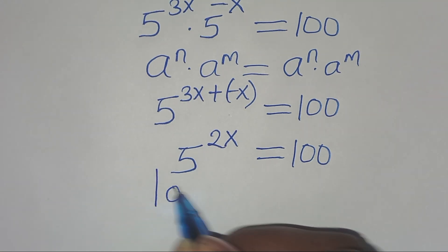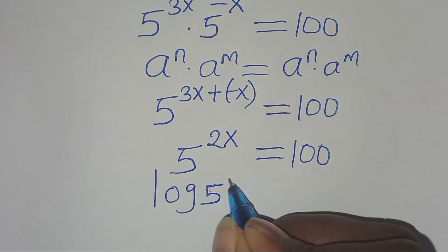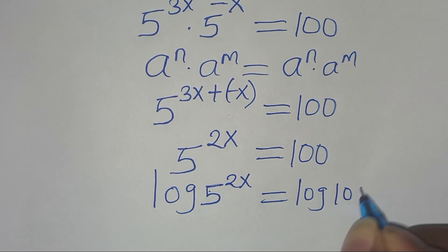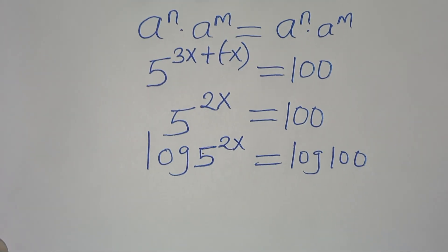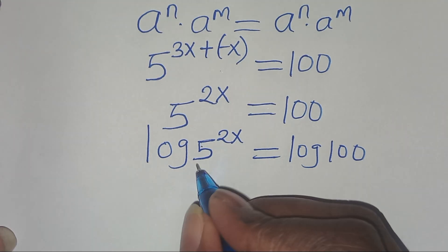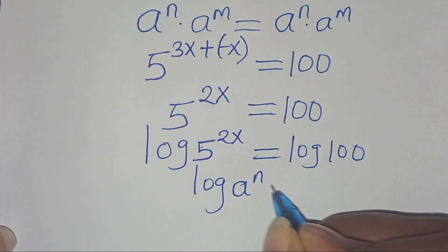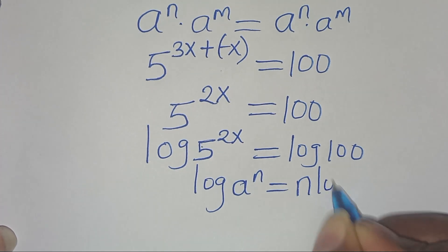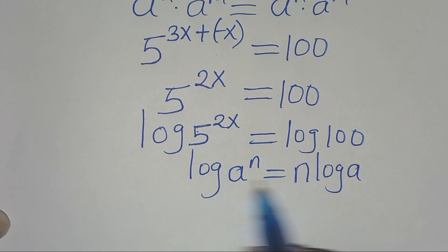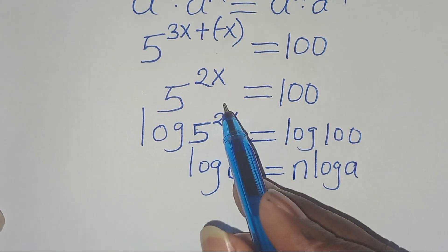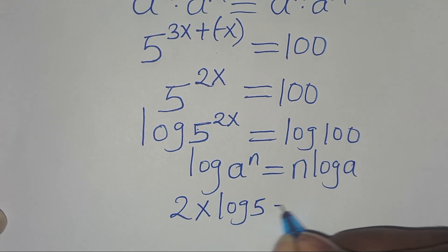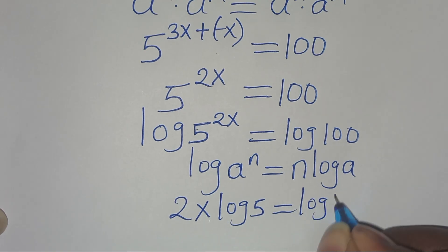Taking log of both sides: log of 5^(2x) equals log of 100. Now, log of 5^(2x) is in the form of log(a^n), which can be expressed as n times log(a). Applying this power property of logarithm, 2x times log 5 equals log 100.